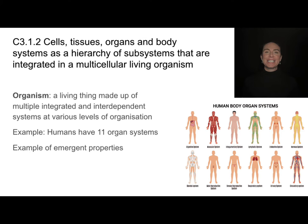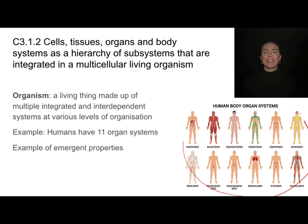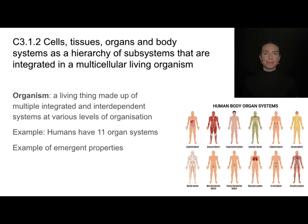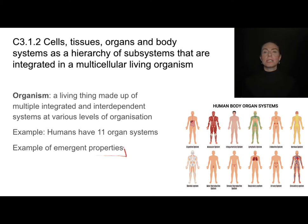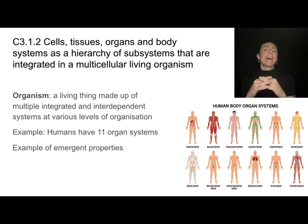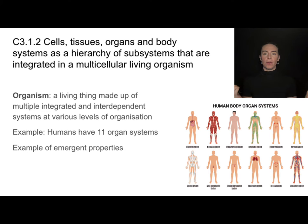An organism is all of those different organ systems working together — a single living thing made up of different organ systems. Humans, for example, have 11 organ systems. The way that organ systems work together is a great example of an emergent property, which is something that only multicellular organisms can have.